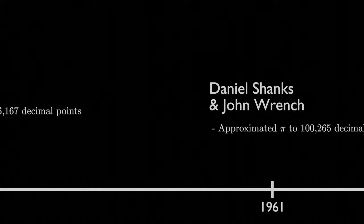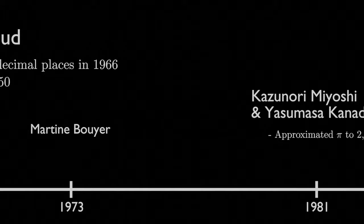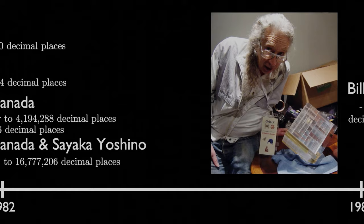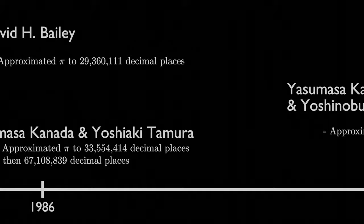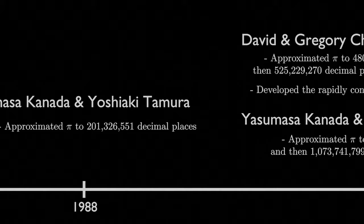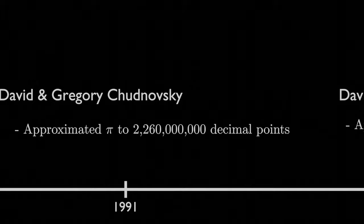Some notable individuals who contributed numerous improved approximations of Pi during this time were Yasumasa Kanada and the Chudnovsky brothers, David and Gregory Chudnovsky. The Chudnovsky brothers not only computed better approximations of Pi, but also developed a new algorithm for computing Pi which is a variation of the Ramanujan-Sato series. This algorithm is still used in computing better approximations of Pi today.